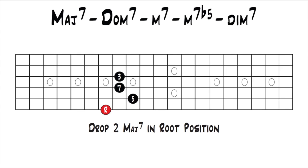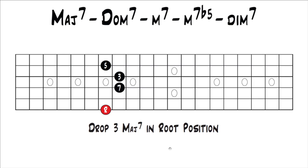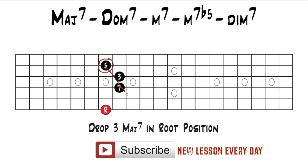We're just going to look at a major 7th because this concept works with all the other 7th chords. We're looking at a drop 2 major 7th chord in root position. To turn this into a drop 3 chord, all you have to do is take the 2nd to lowest note and move it up an octave to your highest note. That gives you your drop 3 major 7th chord in root position. Or if you wanted to go from drop 3 to drop 2, you just do the opposite — take your highest note and move it down an octave and it becomes your 2nd to lowest note, and then you have a drop 2 chord.